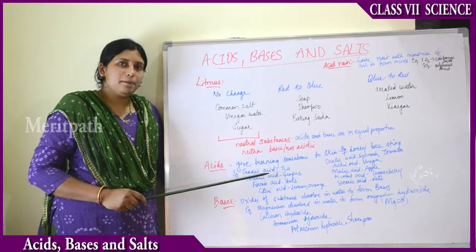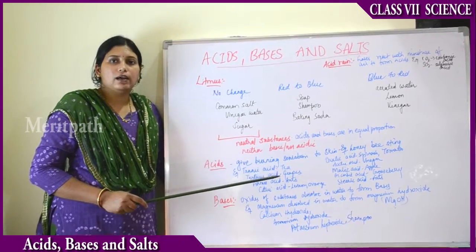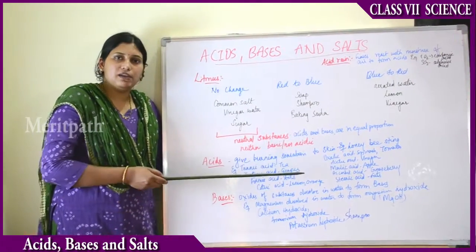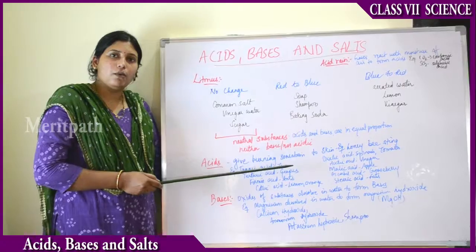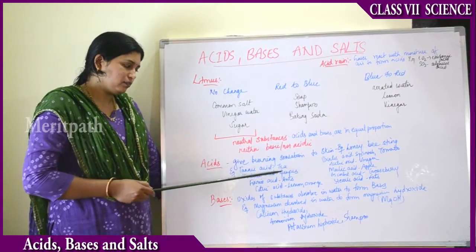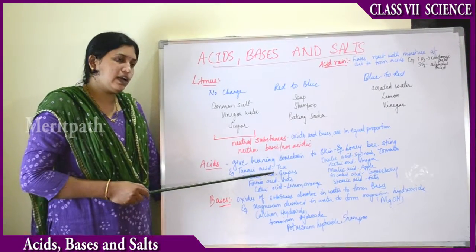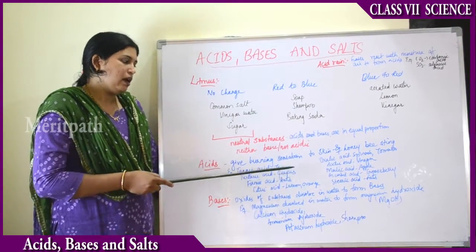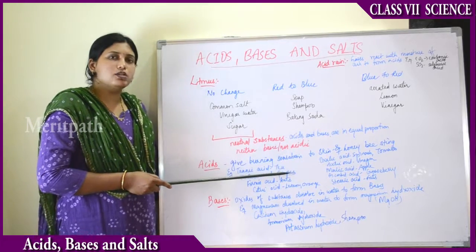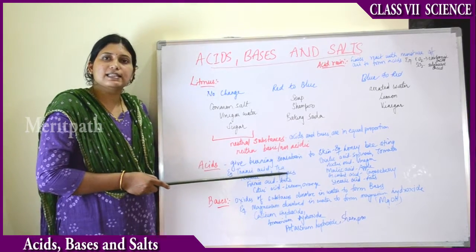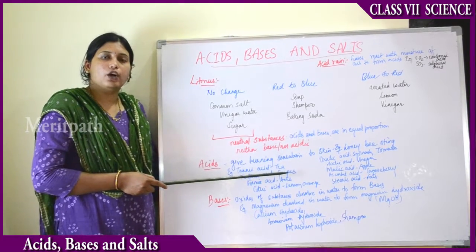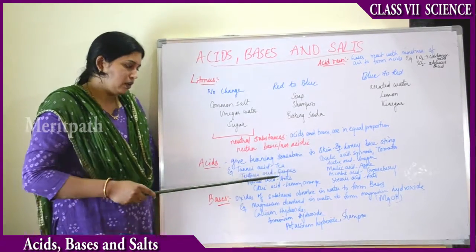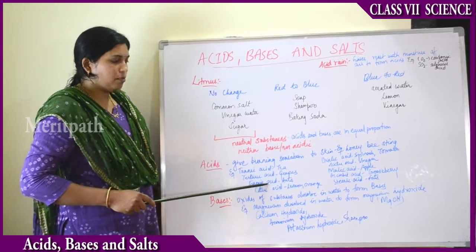Some examples of naturally occurring acids around us: tannic acid, available from tea; tartaric acid, whose sources are grapes and tamarind, which we consume daily in our food. Then there is formic acid.